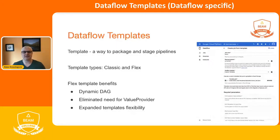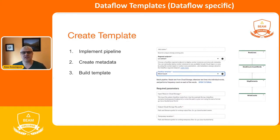Benefits of flex templates include a dynamic execution graph that is constructed and validated at job launch time based on final parameters the user supplies. For example, a template can support PubSub and GCS input sources and will construct the pipeline execution graph based on the supplied parameters. Flex templates eliminated the need for the value provider interface, improving developer experience and expanding I/O options available. Creating DataFlow flex templates has three steps: implement the pipeline, create metadata, and build the template.